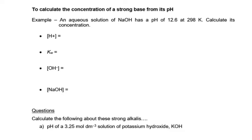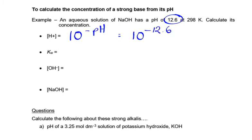We can also work out the concentration of a strong base from its pH, as we did with strong acids. The hydrogen ion concentration is 10 to the minus pH. So if the pH of sodium hydroxide is 12.6, the hydrogen ion concentration is 10⁻¹²·⁶. Kw will be given in the question, and we've just worked out the hydrogen ion concentration — you can leave it as 10⁻¹²·⁶ if you wish.